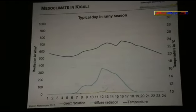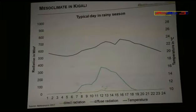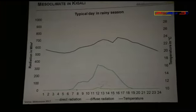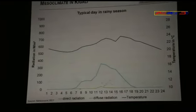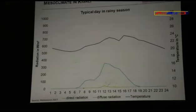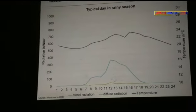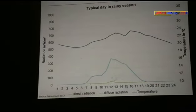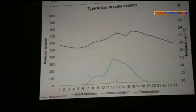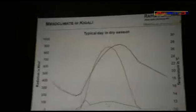We chose two days — one typical day for the rainy season. We see the temperature is somehow stable over day and night, around 22 degrees. During the day it's a little bit higher at 24, and during the night a little bit lower at 20 degrees. The solar radiation is mainly diffuse; we had clouds the whole day. But there are also other days in this research.